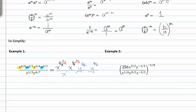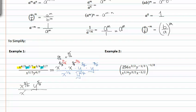I'm going to go ahead and leave x to the one-half and y to the six-sevenths alone until I've simplified the numerator. Looking at the x's, I now have x to the sixteen-twelfths plus fifteen-twelfths. Adding those together, I get thirty-one-twelfths. Adding the y's together, I have two-sevenths plus three-sevenths, which is five-sevenths. Again, it's still over x to the one-half, y to the six-sevenths.